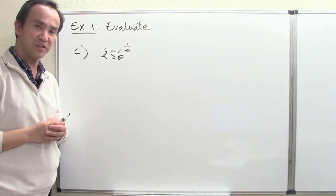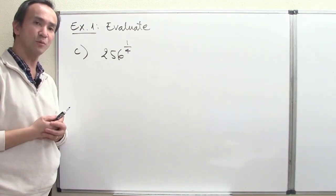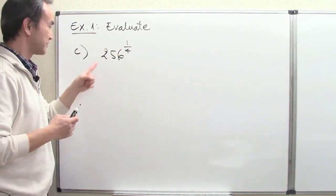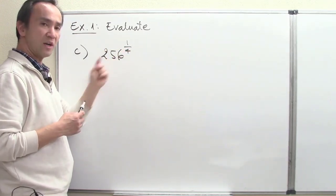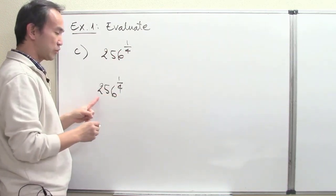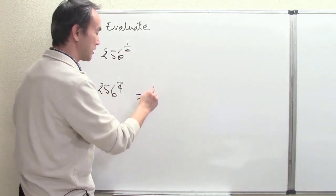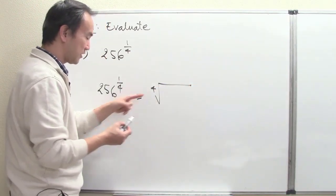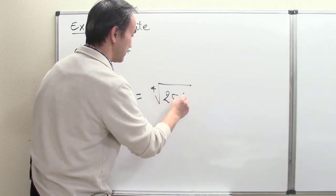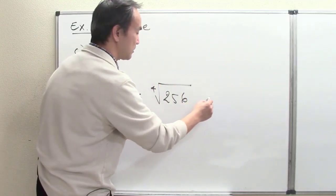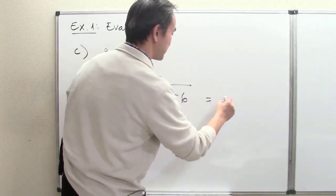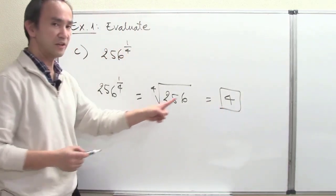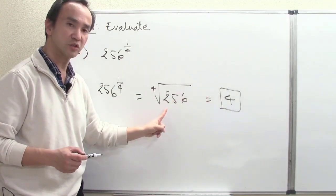Part C: evaluate 256 to the 1 fourth power. From the definition, 256 to the 1 fourth power is understood as the fourth root of 256. The answer comes out being 4, simply because 4 to the fourth power equals 256.